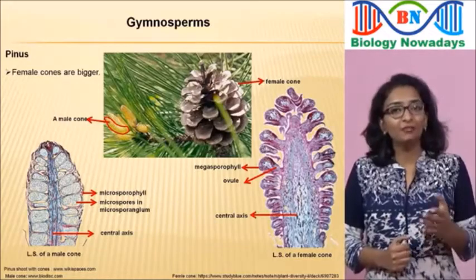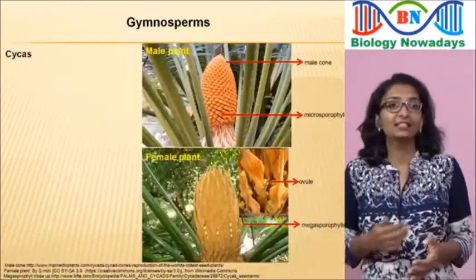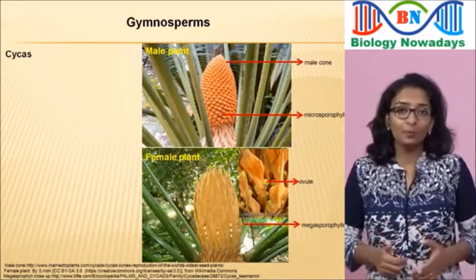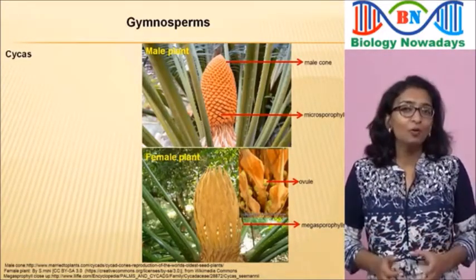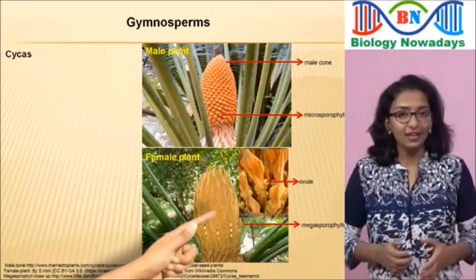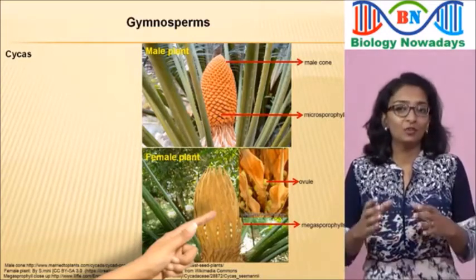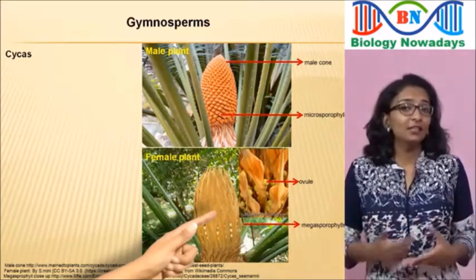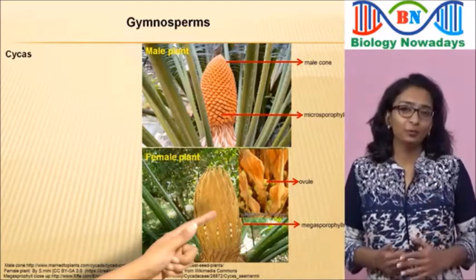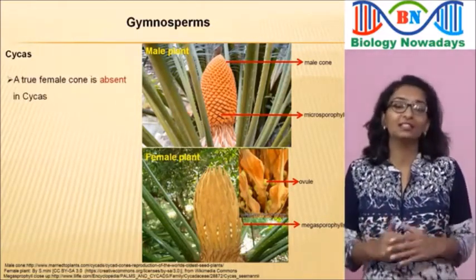The male and female cones may also be seen on different trees, as in the case of Cycas. But in Cycas, the megasporophylls are not arranged around a central axis in a cone. Instead, they are loosely arranged at the stem apex, appearing like a rosette. Sometimes it may look like a cone but it is not a true cone — so a true female cone is absent in Cycas.